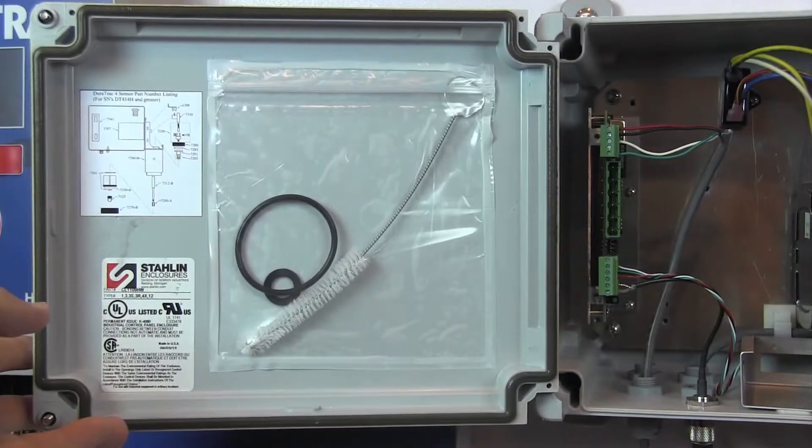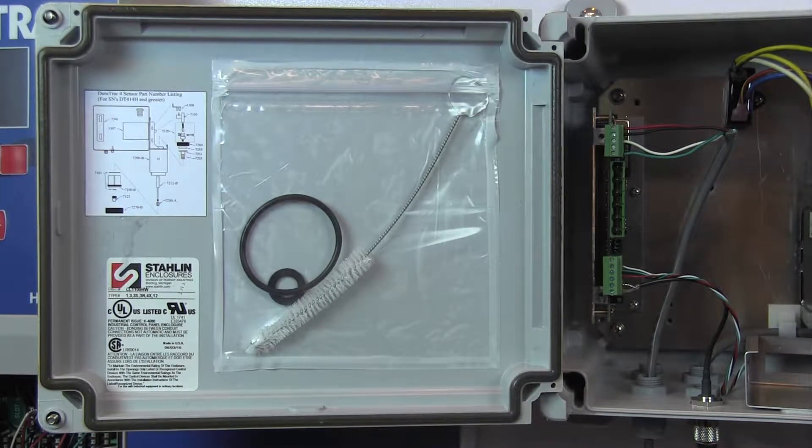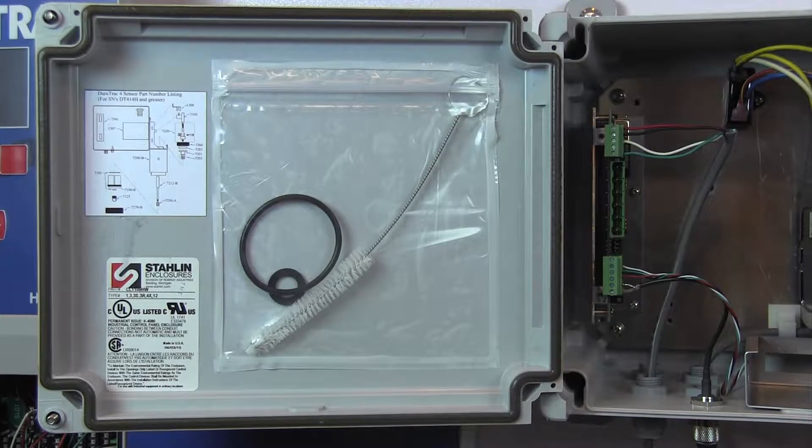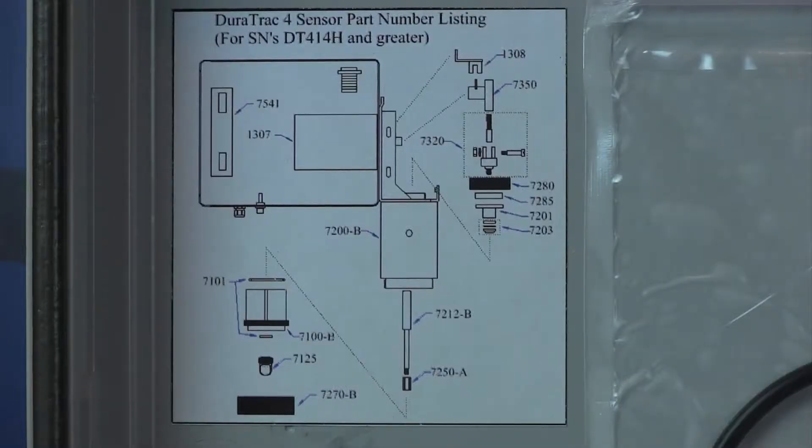When the Duratrac 4 sensor is shipped, a bag will be attached inside the enclosure door containing a cleaning brush, an extra sensor o-ring, and an extra gasket for the probe end plug. A labeled parts diagram is also included.